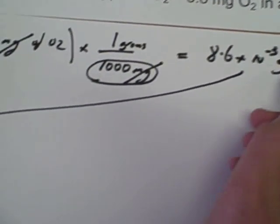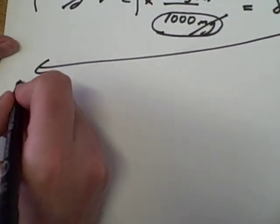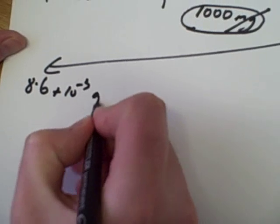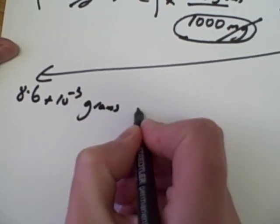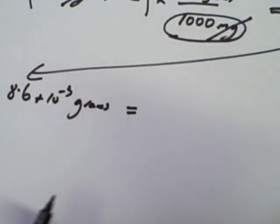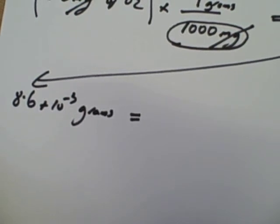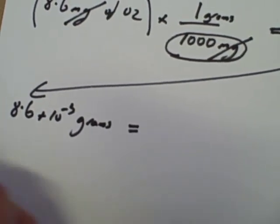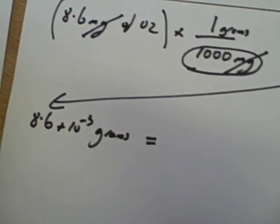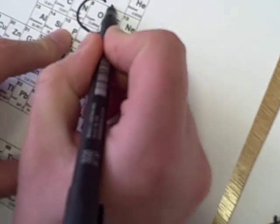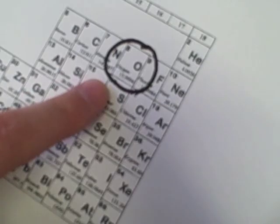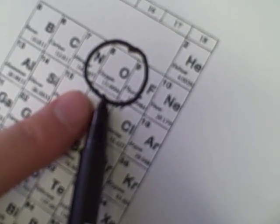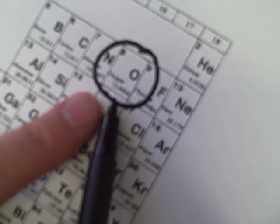Now what I want to do is convert grams into moles. So, 8.6 times 10 to the minus 3 grams. What is a mole? Well, a mole is an amount of substance — it's a quantity. I need the periodic table for this because I'm dealing with oxygen — here it is. You can find a periodic table on the VLE in my lecture folder. Oxygen has two numbers: atomic number 8, and we'll call the atomic mass 16.